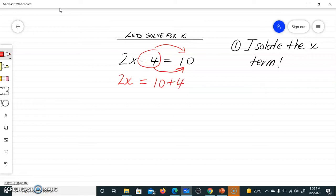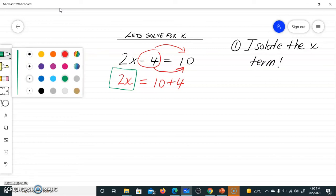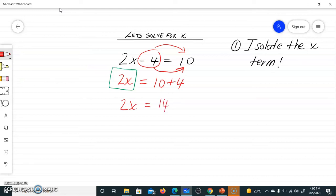And then we've isolated it. We've isolated the x term, which is the 2x. And how did we isolate it? We isolated it by moving the minus 4 to the right hand side. And then what do we have? We've got 2x is equal to 10 plus 4. So 2x is equal to 14. And then from here, what do we do? Just divide by 2, and x is equal to 7.